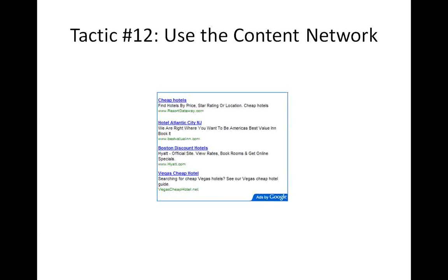Tactic number 12 is to use the content network. There are basically two sides to Google AdWords: the search network, where you search on Google and see ads, and the content network, where Google has ads all over the web — they're the largest ad delivery company. With the content network you can target specific audiences, like soccer fans, through a lot of different soccer websites. The content network works based on keywords — you create a campaign around a topic like soccer, Google scans the web for relevant pages, and if your keywords match the content, they show your ad there.